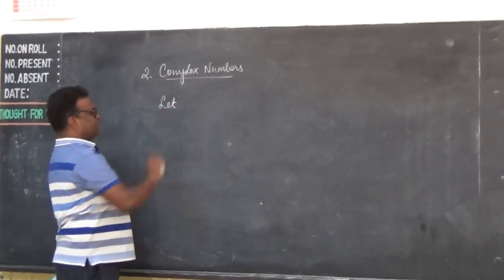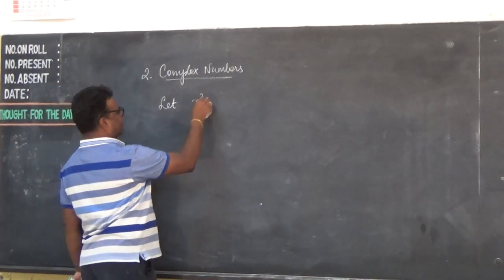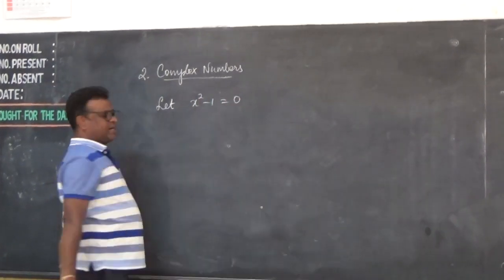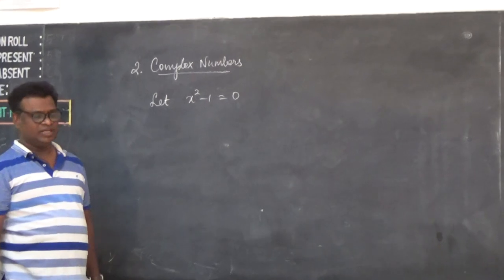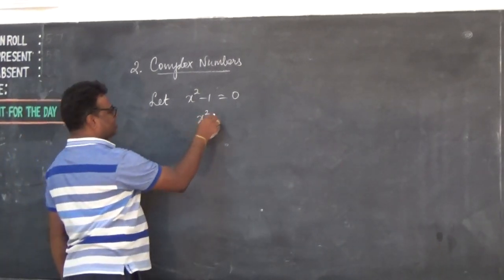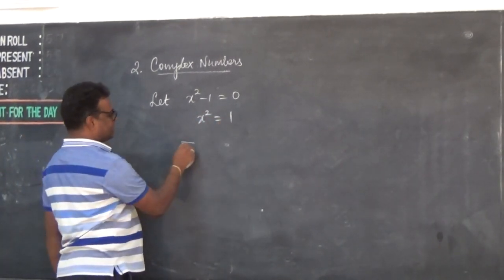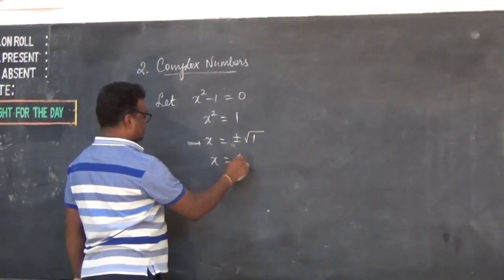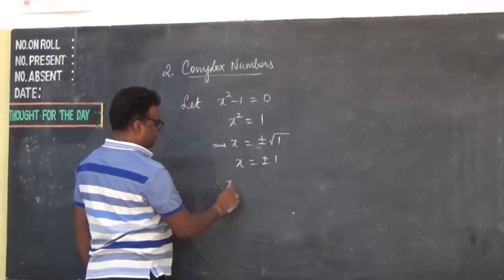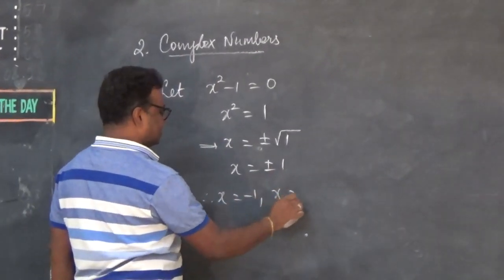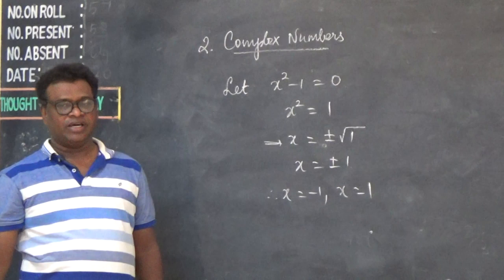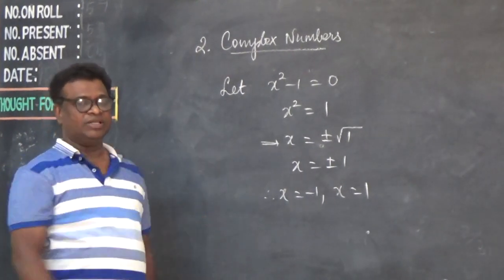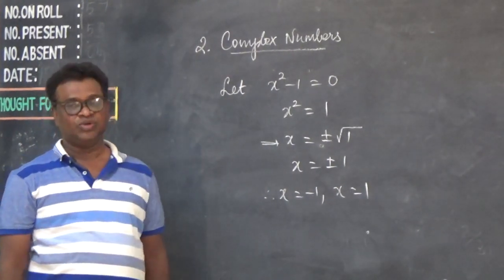We might have come across equations of the form x² - 1 = 0, then x² = 1. In this case, x = ±√1, which is ±1. Therefore, x = -1 or x = +1. So we are able to find out the two solutions as two real numbers.